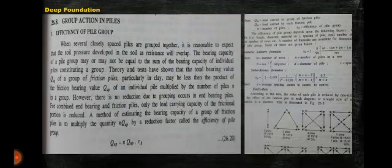In this slide I have discussed about group action of pile. When several closely spaced piles are grouped together, it is reasonable to expect the soil pressure developed in the soil to resistance will overlap. The bearing capacity of pile group may or may not be equal to sum of the bearing capacity of individual pile consisting the group. Tests have shown the total bearing value, that is Q_ug of group of friction pile, may be less than the product of the friction bearing value, that is Q_up of an individual pile multiplied by the number of piles n in group. There is no reduction due to group actions where end bearing pile. For combined end bearing and frictional pile, only the load carrying capacity of frictional portion is reduced.